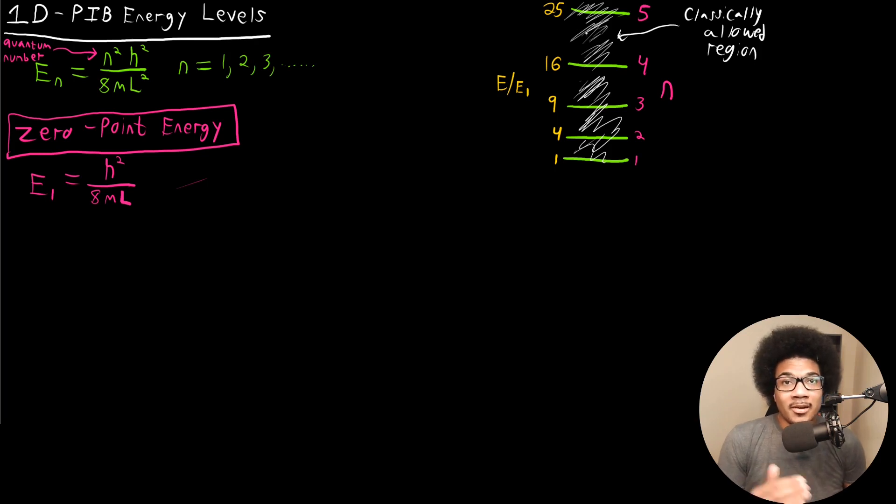Basically in classical mechanics, a particle could take on any of these values from one to whatever. Versus for the case of a quantum particle, a quantum particle is going to have these discrete energy levels. And we see that play out here with the one-dimensional particle in the box where it has these discrete energy levels that it can jump between.